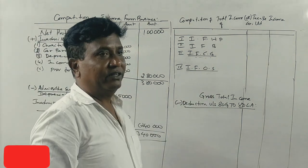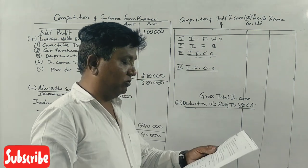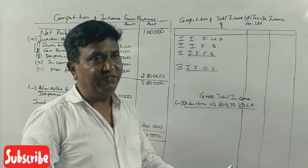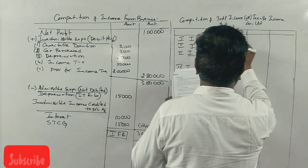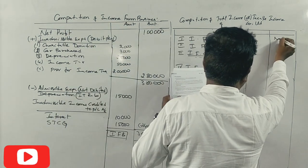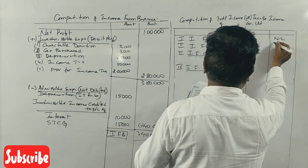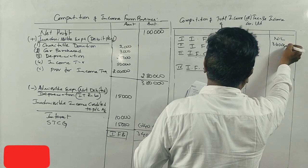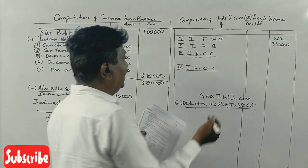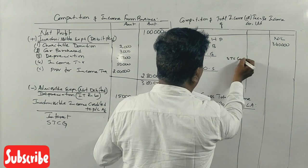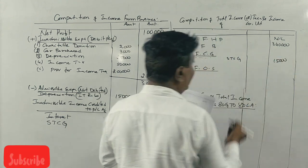Now let's compute the taxable income of Vijayalakshmi Limited. Income from business is 3,40,000. Income from house property is nil. Income from capital gains — short-term capital gains — is 15,000.